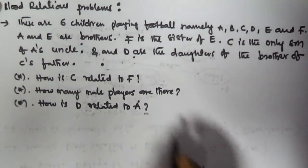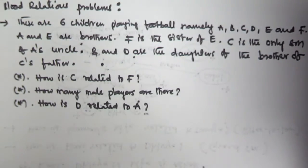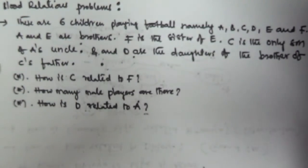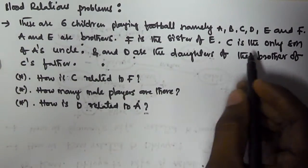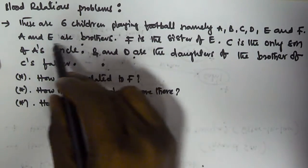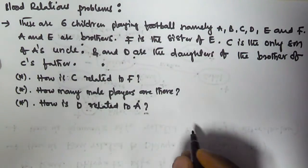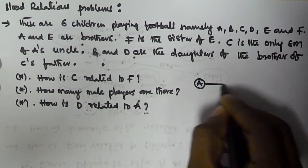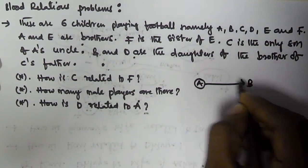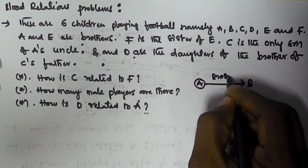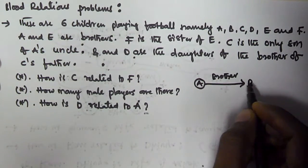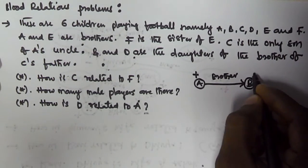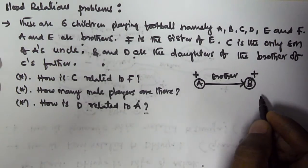To solve these, we will first draw the relationship graph. There are six children; A and E are brothers. Since both are brothers, both are males, and I am representing that with a plus sign.